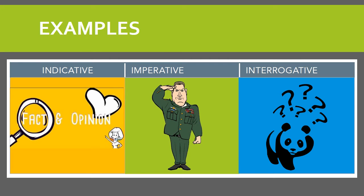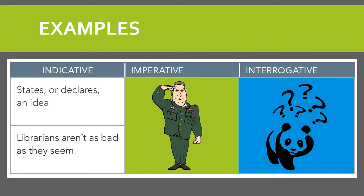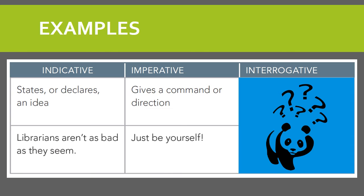Let's look at some examples of the different types of verb moods. The first one is indicative. Indicative states facts or opinions. For example: 'Librarians aren't as bad as they seem.' This is an opinion. Imperative again gives a command or direction — for example: 'Just be yourself.' That is a command to be yourself.